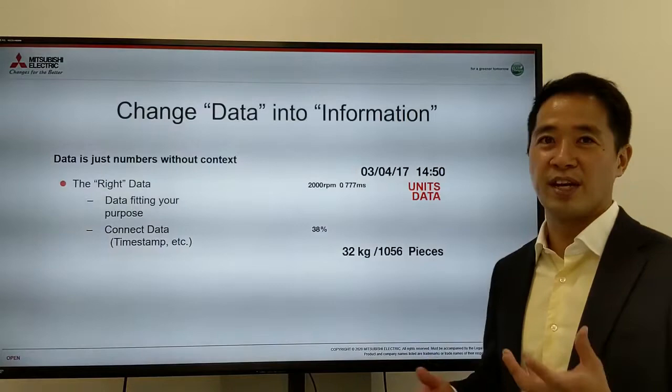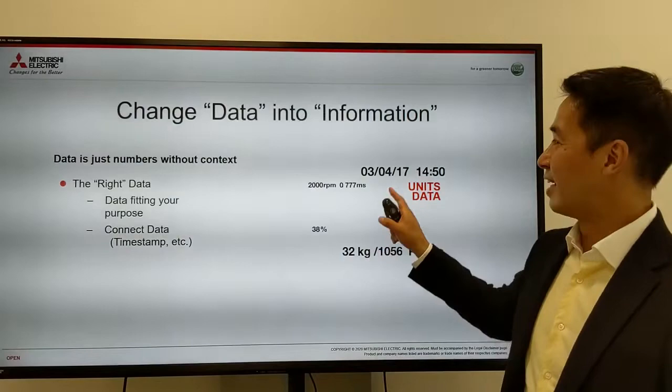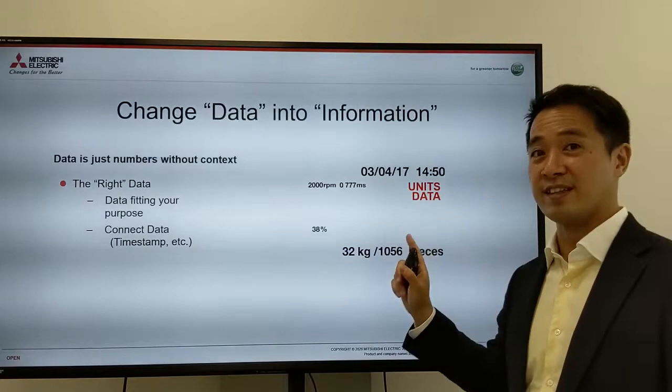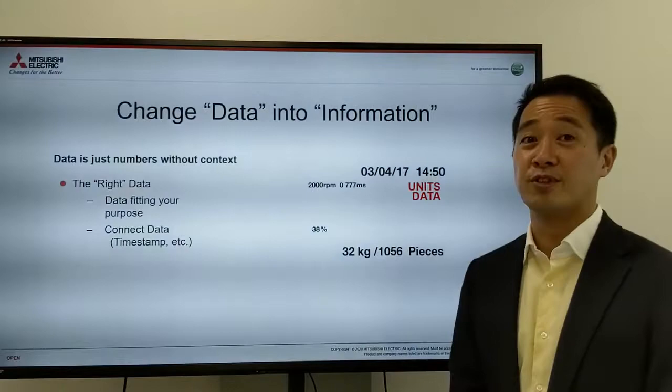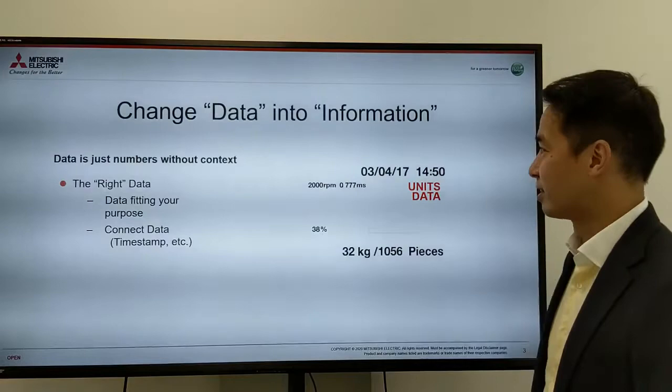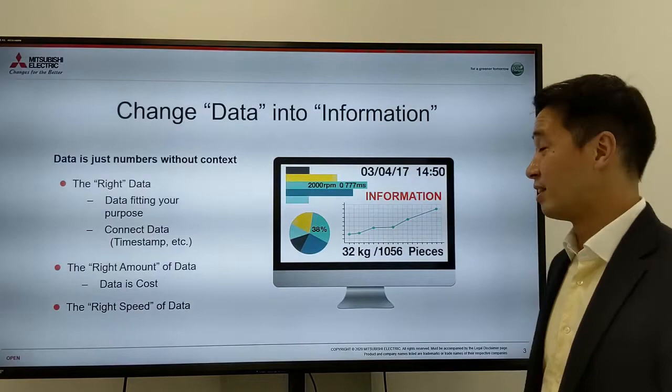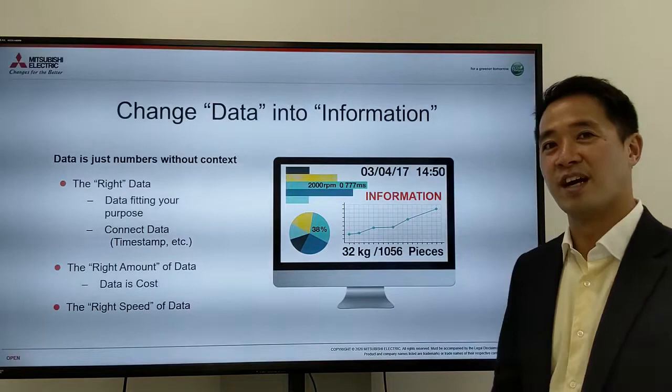This data was created at this time, using this machine, when we're processing this part. If you don't connect all these bits and pieces together, the computer won't be able to understand it. That's why this initial processing of the data is very important. After you've done this initial processing — changing data into information — then you will be able to go to the data analytics world and the Kaizen world using artificial intelligence.